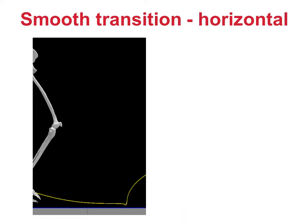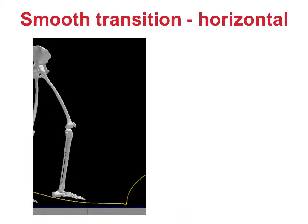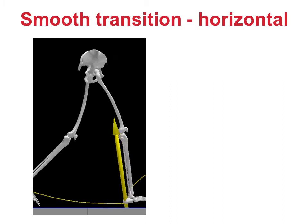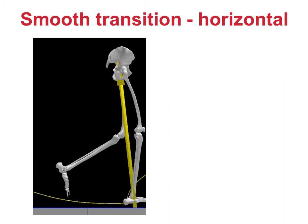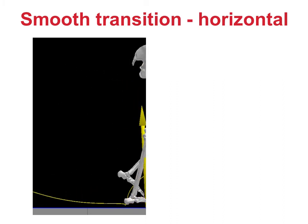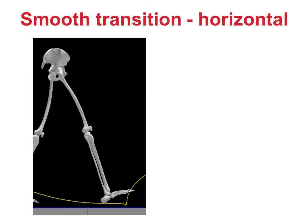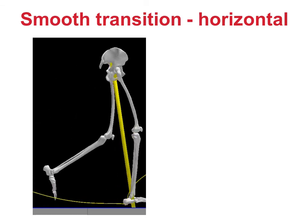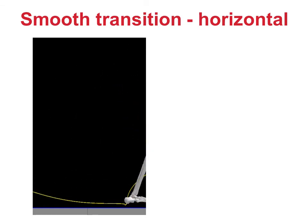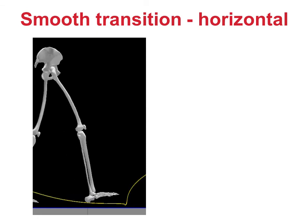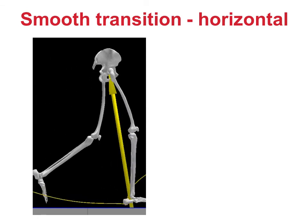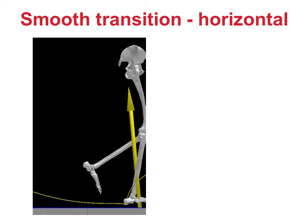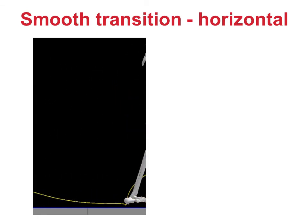Let's first look at the evidence for this in the sagittal plane. In this animation I've identified the point on the foot under which the ground reaction first appears, and then plotted its trajectory through swing. You can see that the foot comes in to land smoothly and is travelling nearly horizontally just before it touches down.